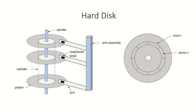We keep our programs and files on secondary storage, which is non-volatile in nature. Non-volatile means that even if the power is switched off, the data is not lost. So all the programs and files are permanently stored on secondary storage, and magnetic disk drives are one example of this. In this video, we are going to take a look at the magnetic disk, or the hard disk as it is commonly known.